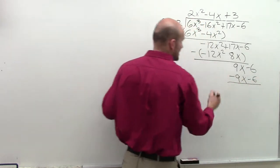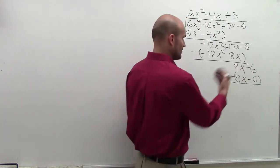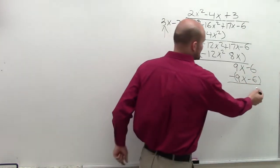Again, subtract the two binomials. 9x minus 9x is 0x. Negative 6 minus negative 6 is 0.